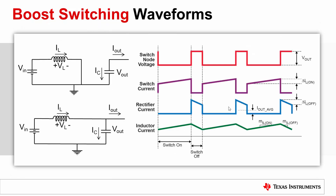We've discussed how the boost converter operates and derived the duty cycle using the steady-state inductor principle. Now let's review some of the voltage and current waveforms. When the control switch is on, the voltage at the switch node is zero, as shown in red. The switch current in maroon immediately jumps to the present value of the inductor current. As the inductor charges, the switch current increases, equaling the inductor current. When the control switch shuts off, the synchronous rectifier or diode rectifies the inductor current. The inductor discharges until the next switching cycle.